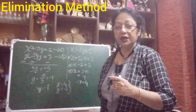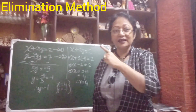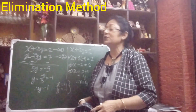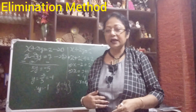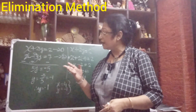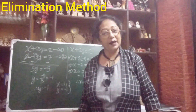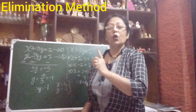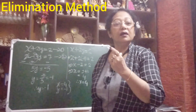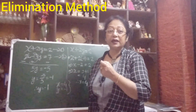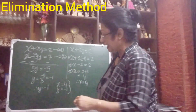This is the elimination method. But you see that in this sum, this one was the easy one. In this sum you can see the coefficient of x is the same in both equations — both are 1x and 1x. If the coefficients are not equal, then what will you do? We will do that in our next sum.